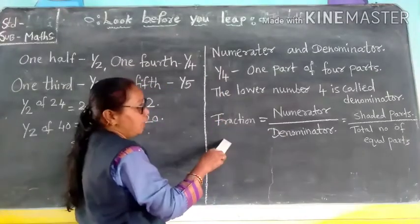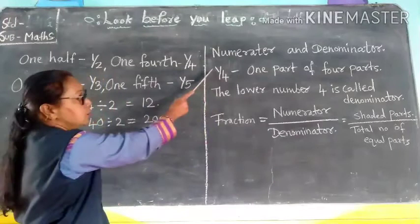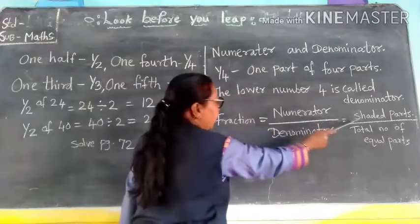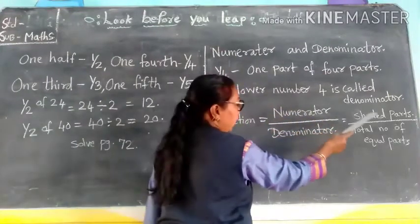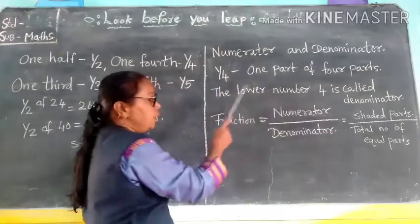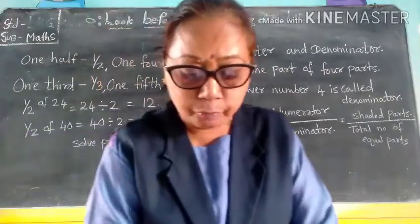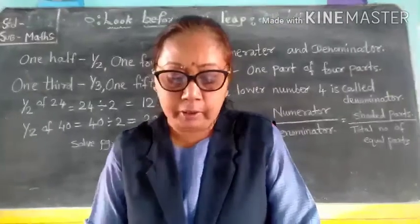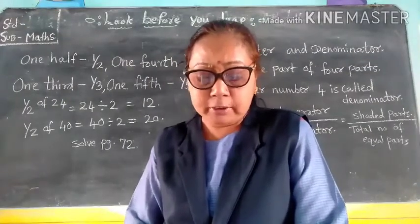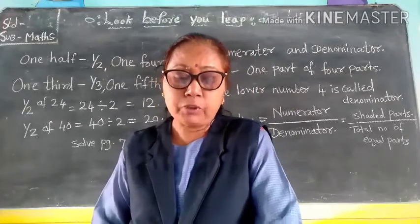In a fraction we have numerator and denominator. One is the numerator and 4 is the denominator. The numerator is the shaded part and the denominator is the total equal parts we are making. You can see this on page number 73. Shaded parts and total numbers. That way you can solve exercise number 2 on page number 73.